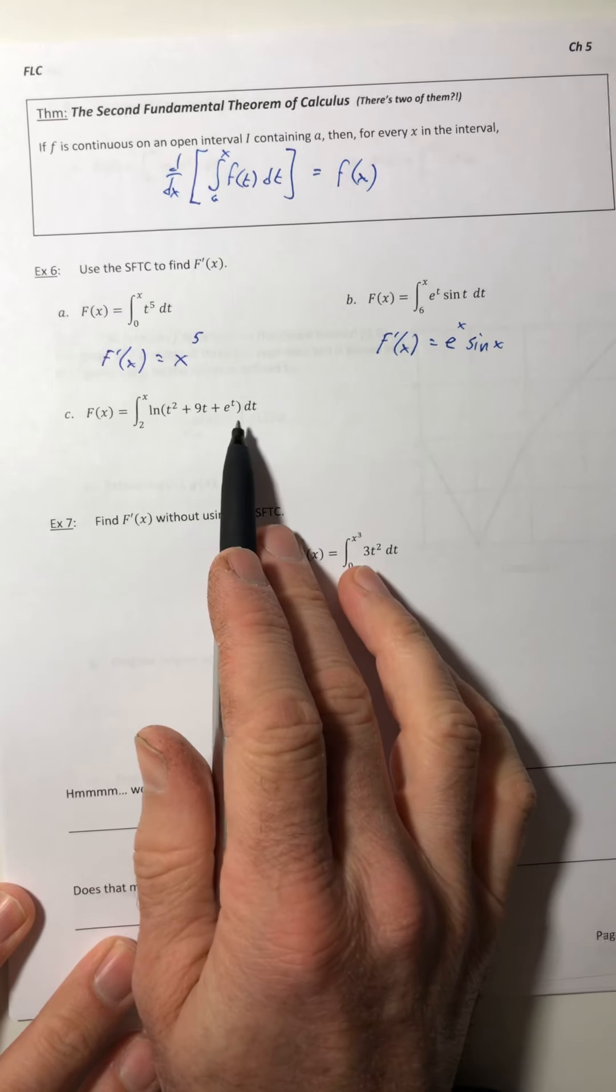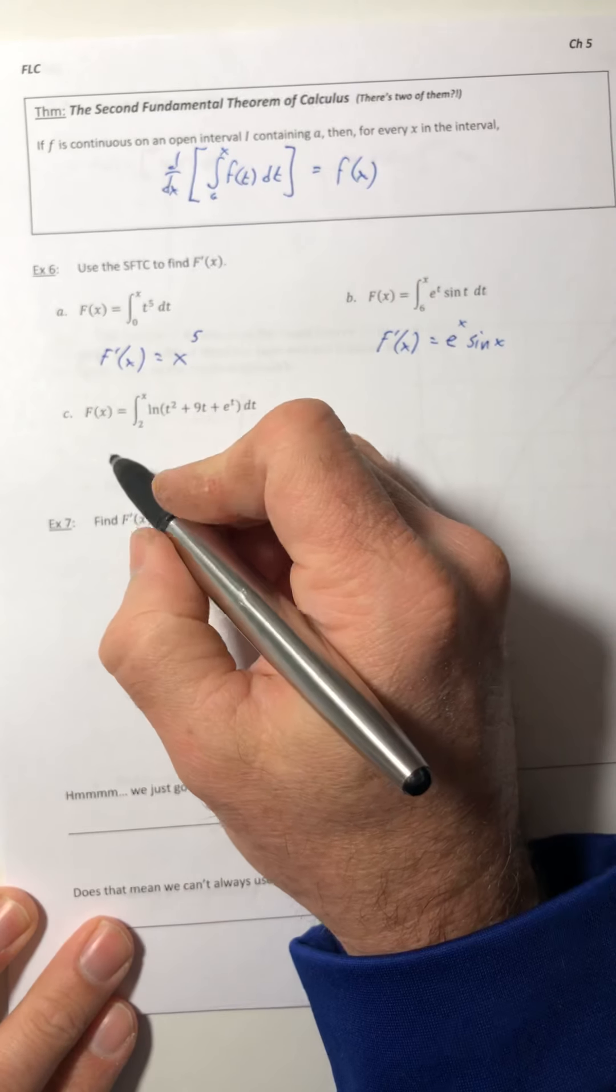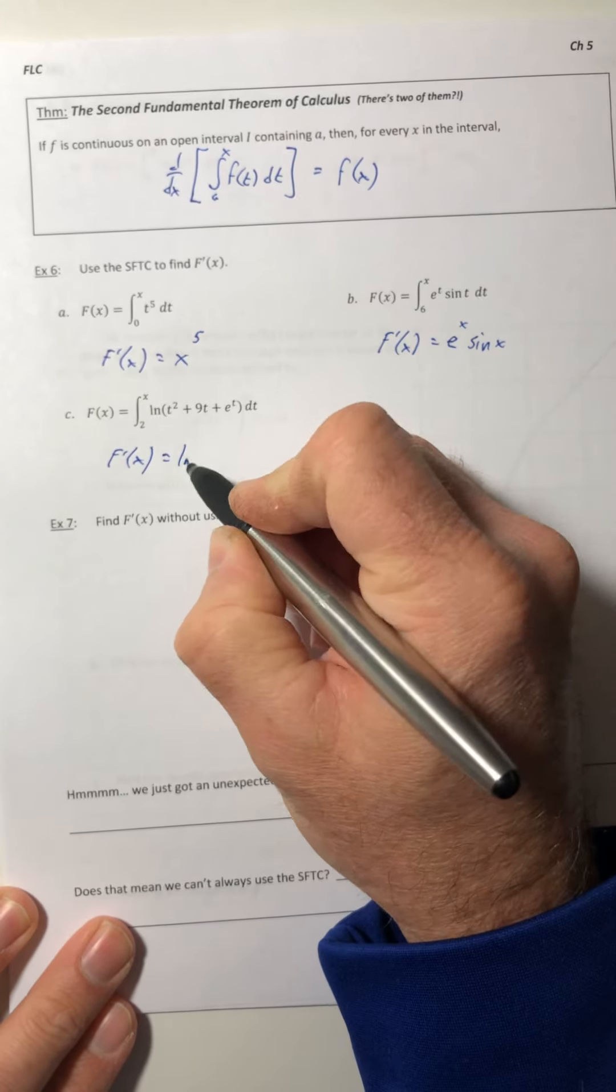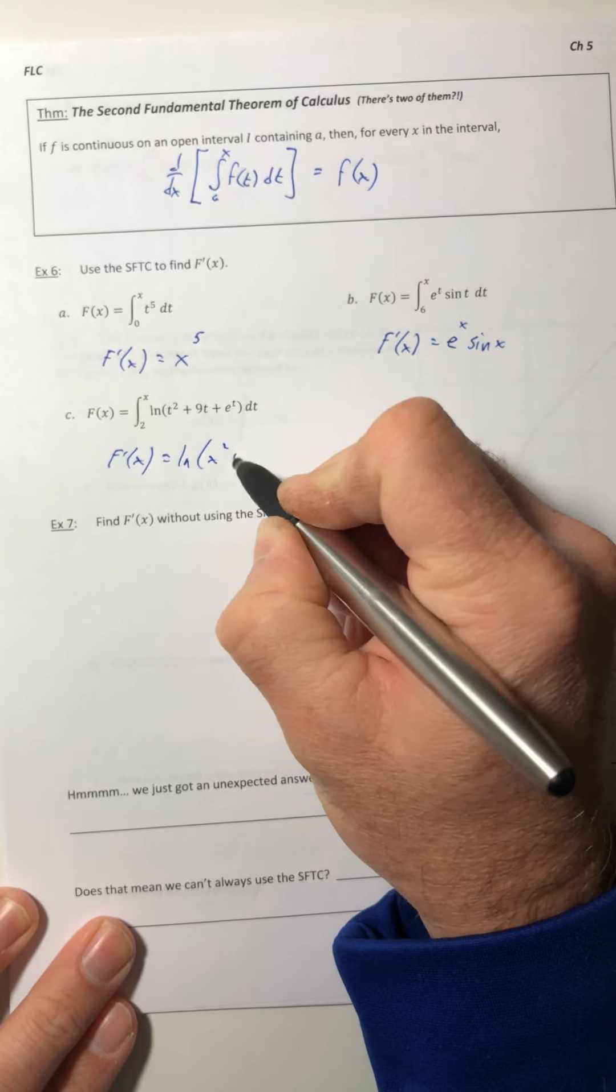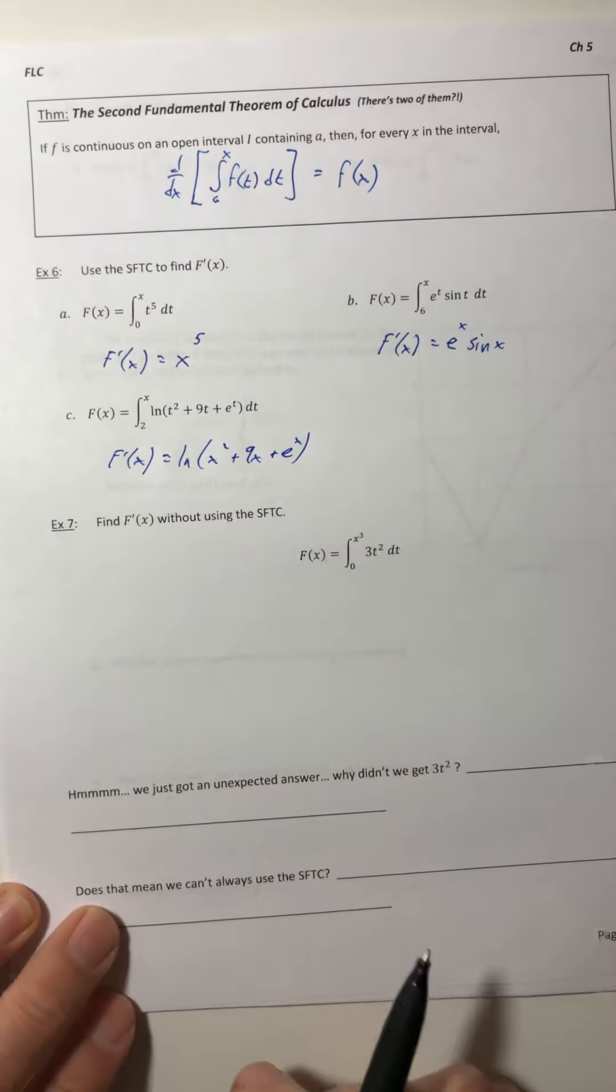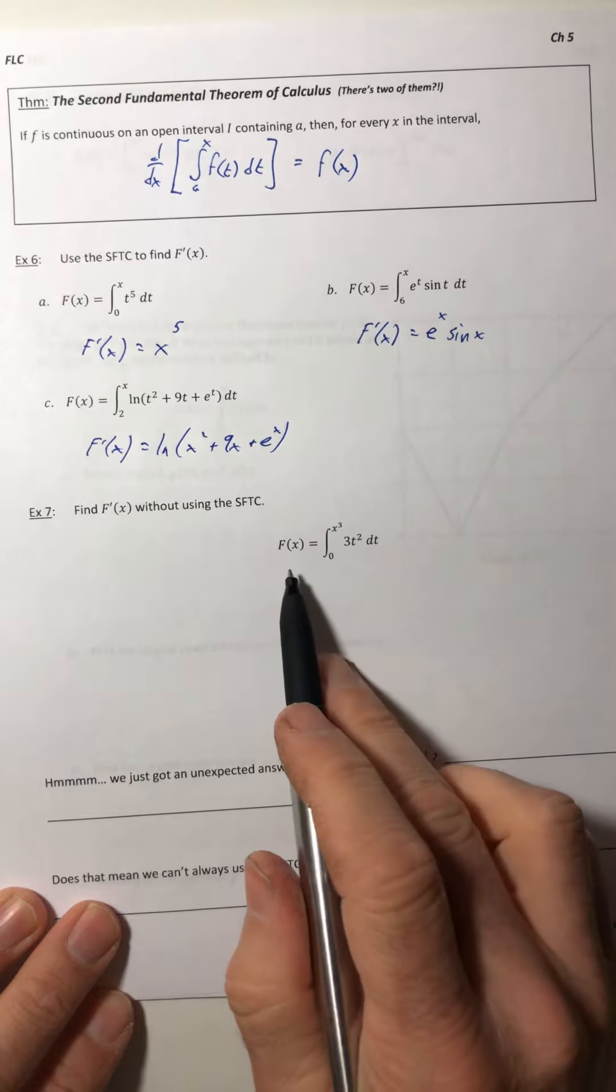And same thing for this one. We have no way to integrate this. It doesn't fit any formula, but thankfully we have that theorem to help us out. So ln of x squared plus 9x plus e to the x. And there we go.